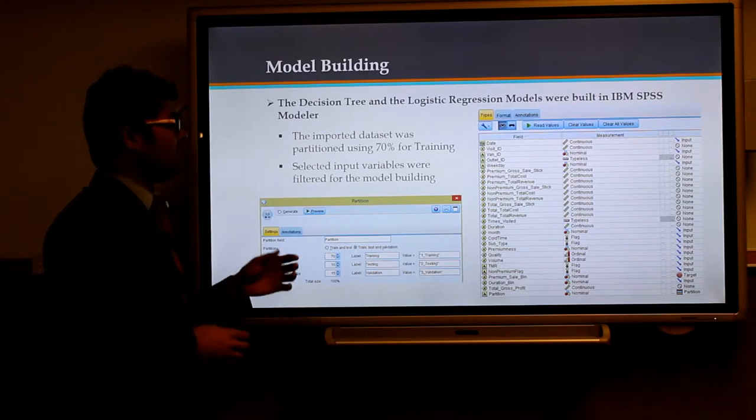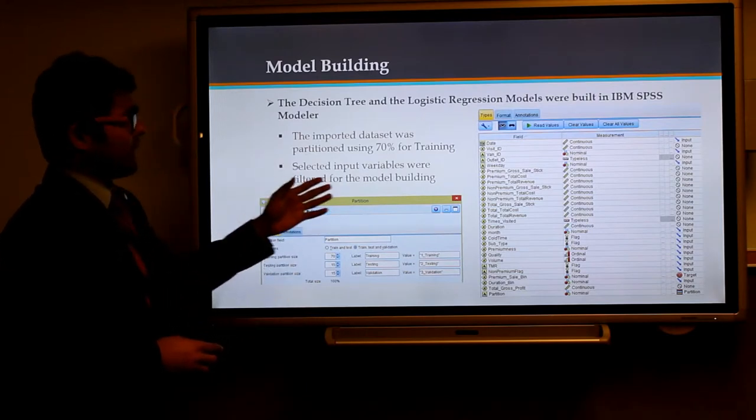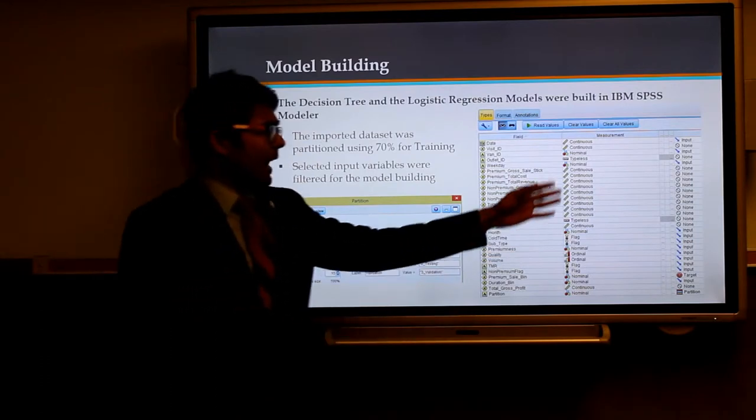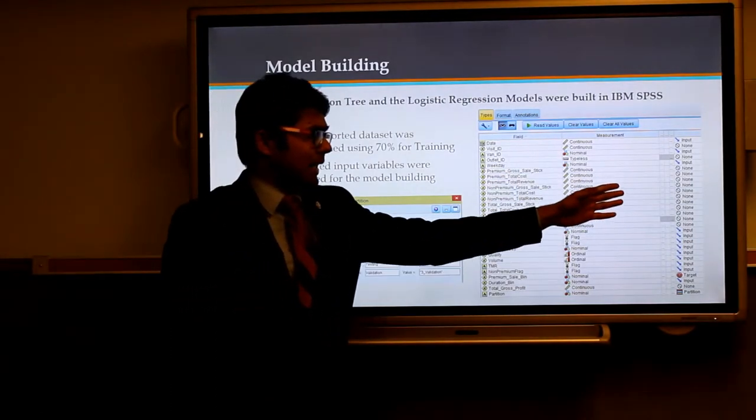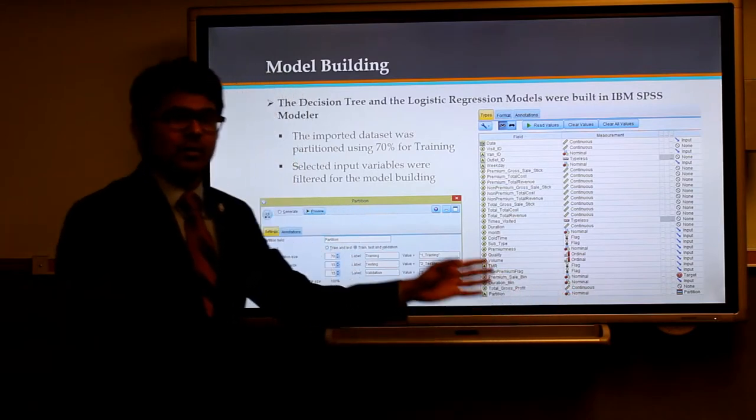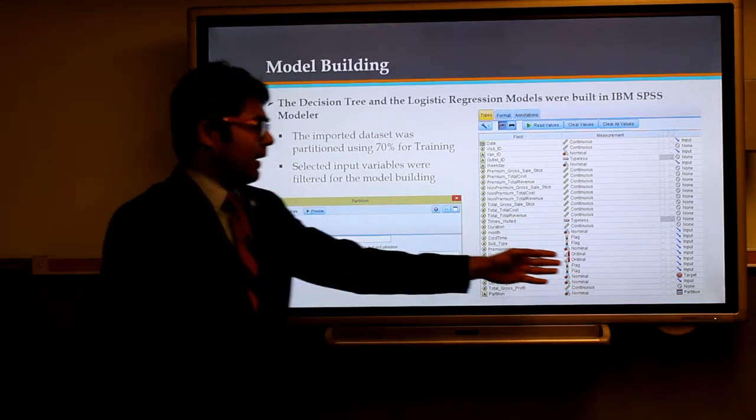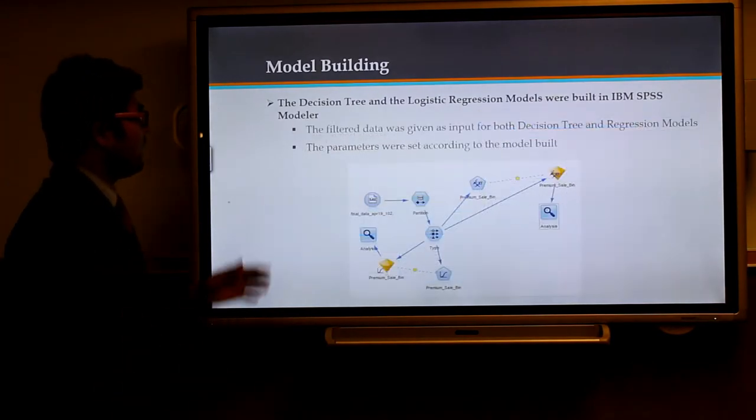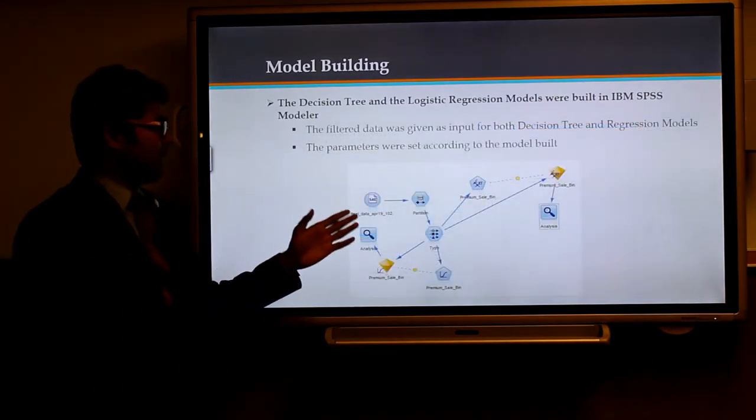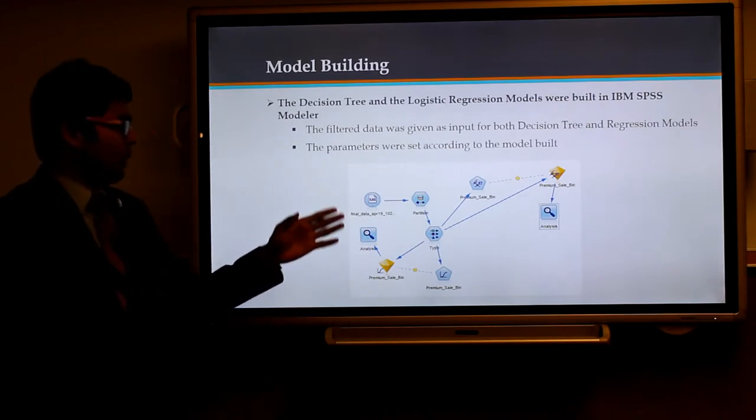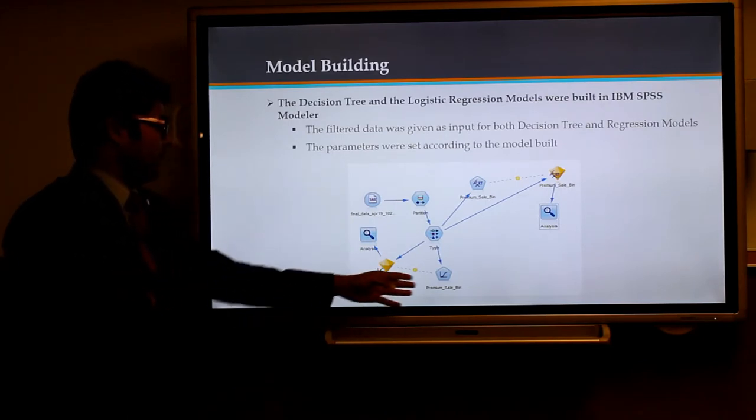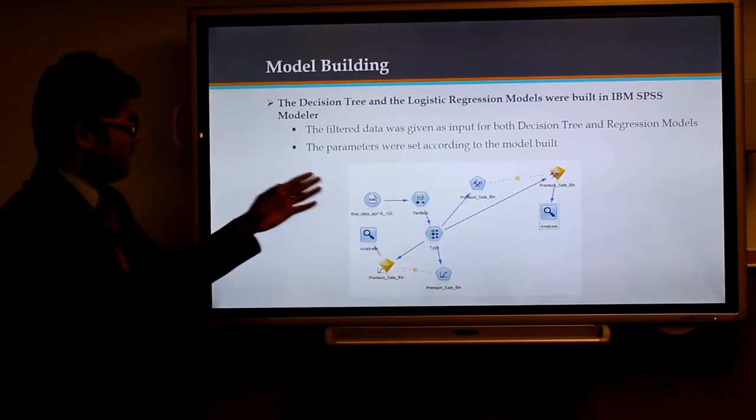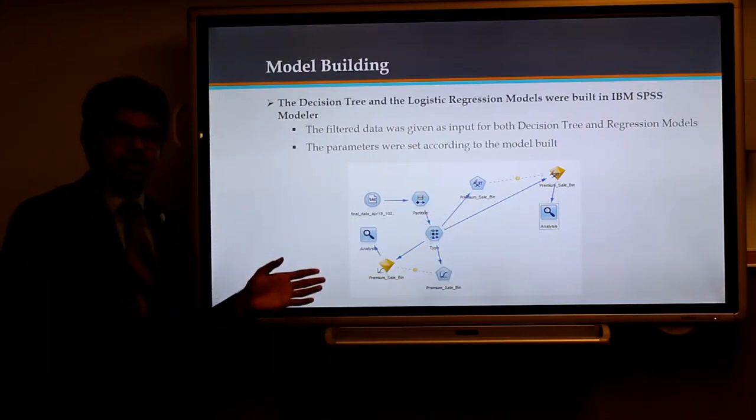Next, we use the input node for selecting the input variables into the models. Here we have the measurements and the selected variables which need to be given as input and target as well. These filtered data were given as inputs for both models, here in the regression model and here in the decision tree model. The parameters for each model were set separately.